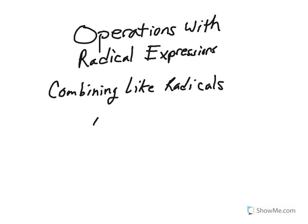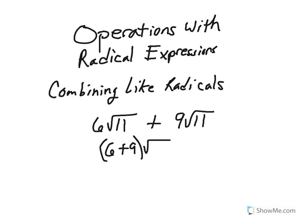For example, 6√11 + 9√11. We take the 6 plus the 9 and write the square root of 11. 6 + 9 is 15, so 15√11 is the final answer. Please pause the video and copy this into your notes.